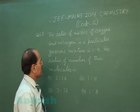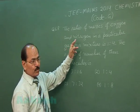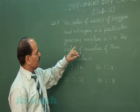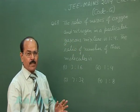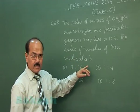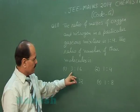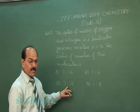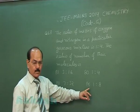Question number 68 says that the ratio of masses of oxygen and nitrogen in a particular gaseous mixture is 1 is to 4. The ratio of number of their molecules is, four options are given: 3 is to 16, 1 is to 4, 7 is to 32, or 1 is to 8.